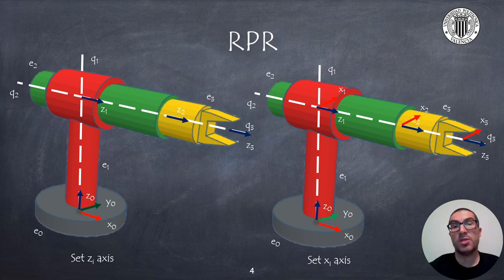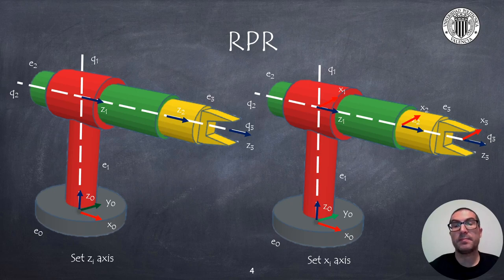We will also set the position of the X axis. We must first compute the common normal between consecutive Z axes to determine the intersection point with the Z axis. Once known, we can set the X direction, as it must be in the same direction as the common normal — either positive or negative direction. For example, we have placed X1 so that it is perpendicular to Z0 and Z1, and the intersection point is where joints Q1 and Q2 intersect.